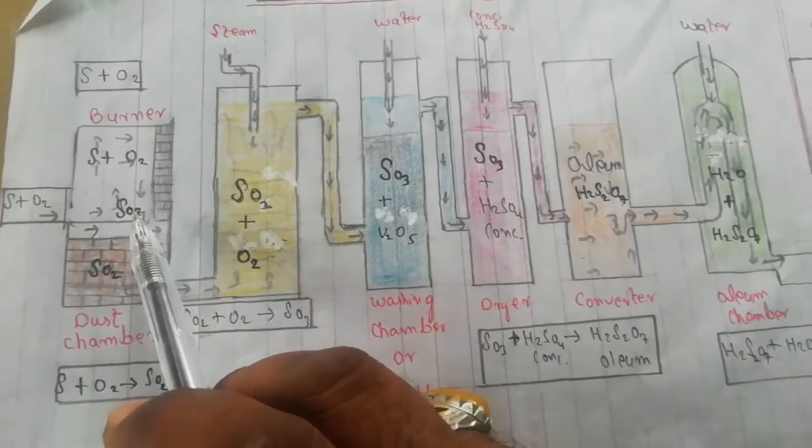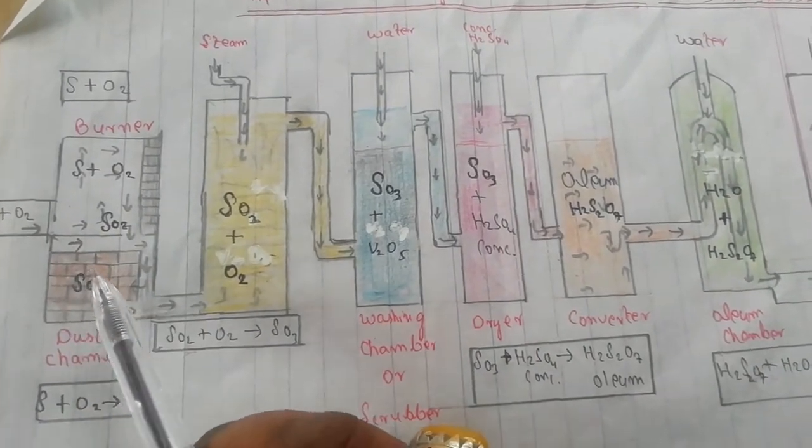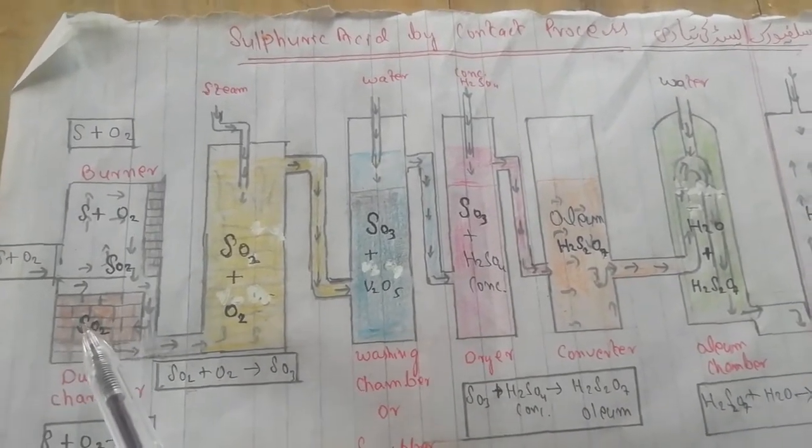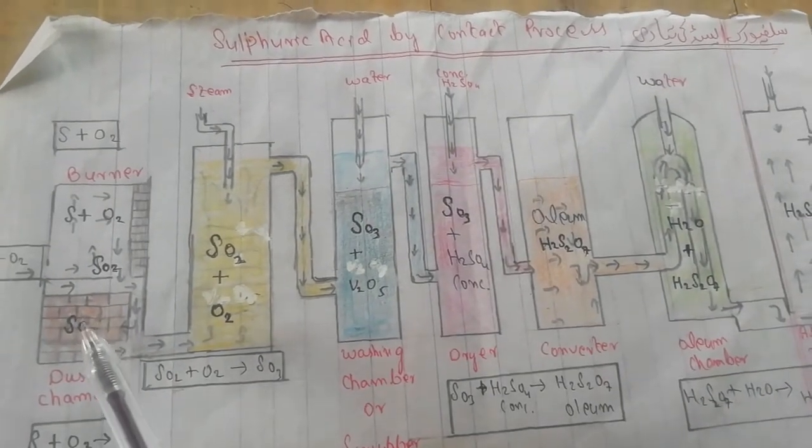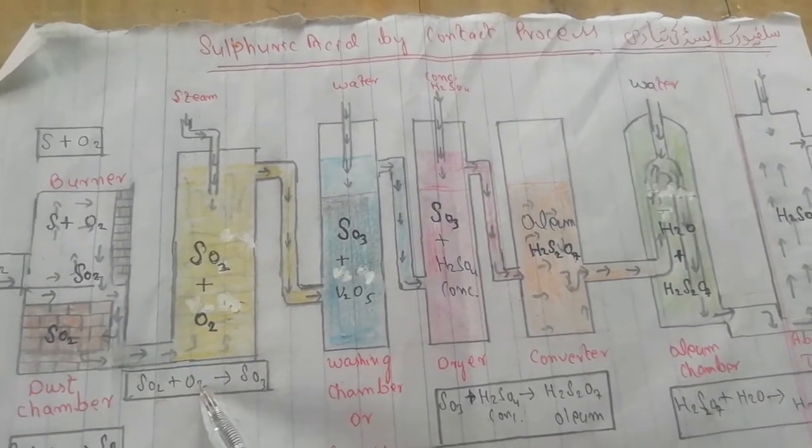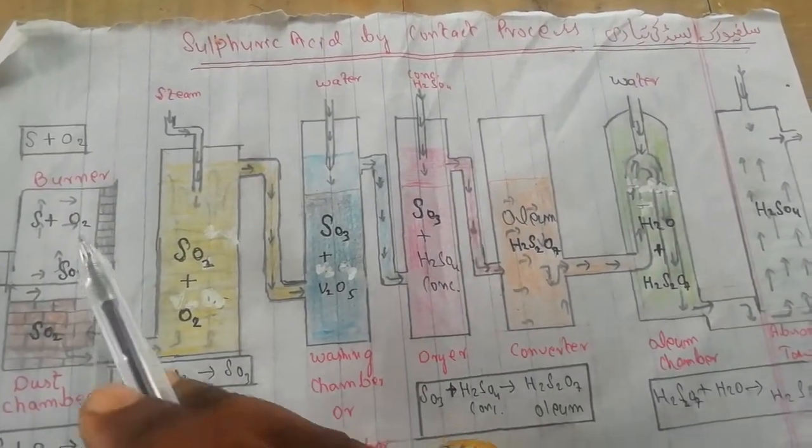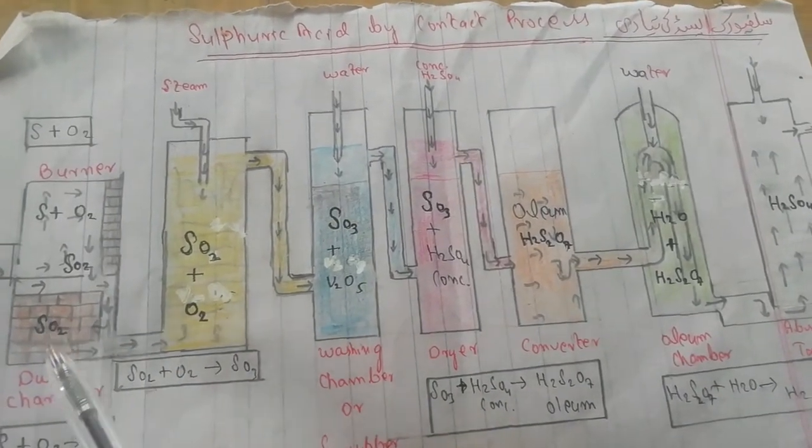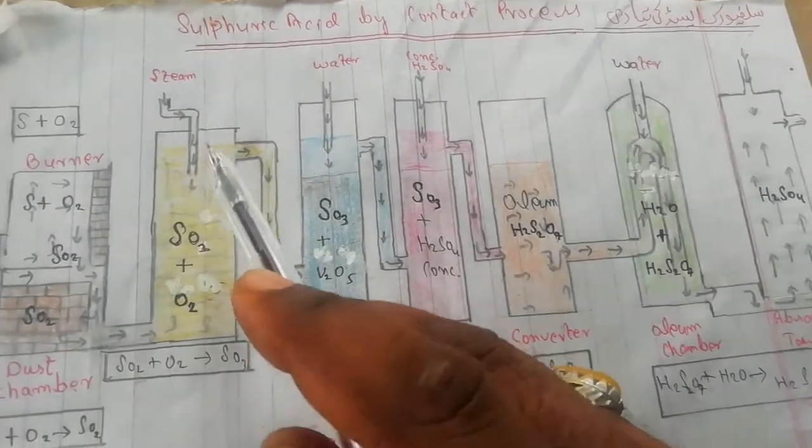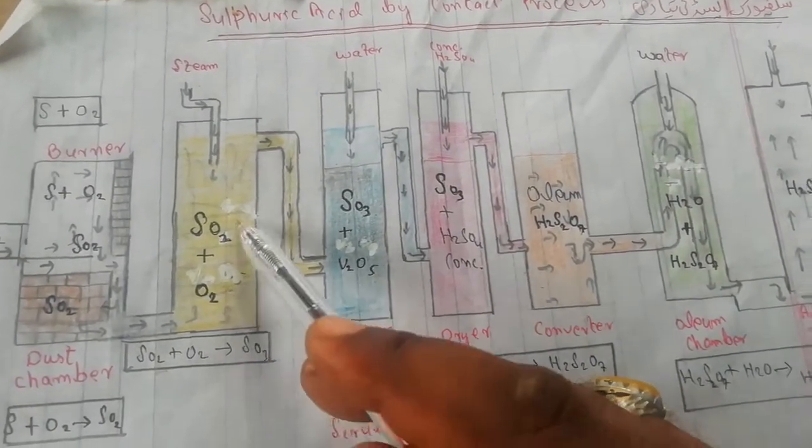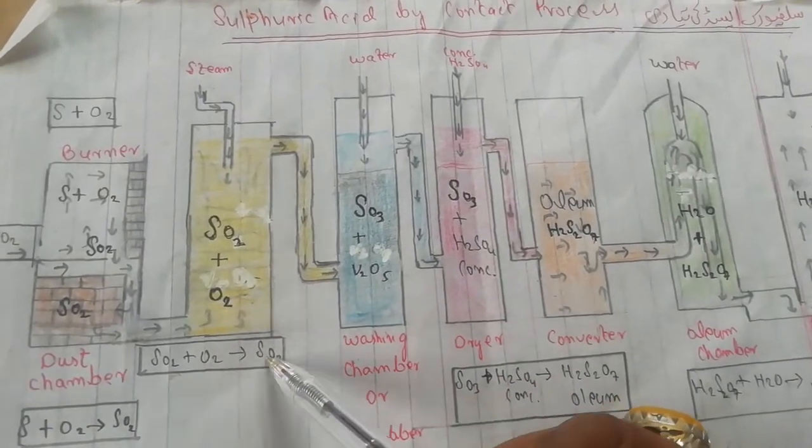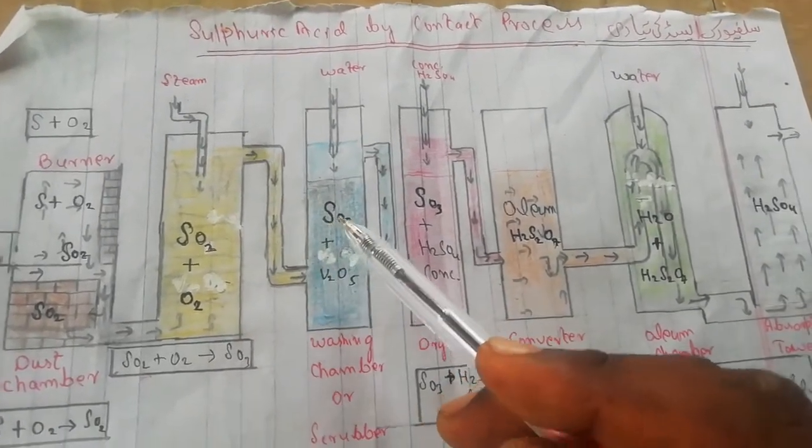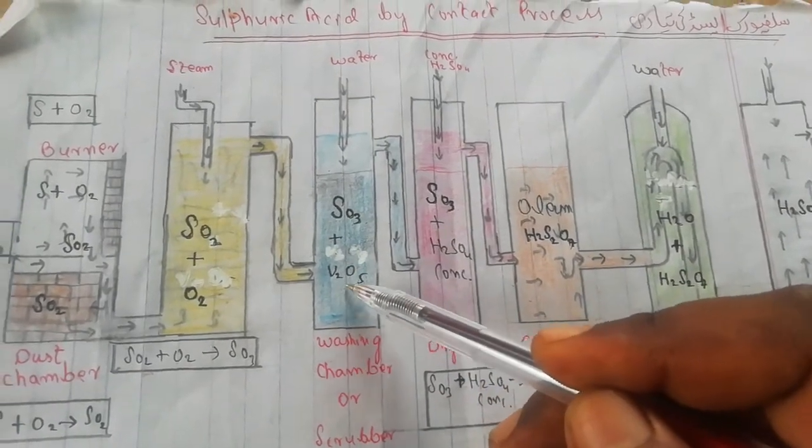The sulfur reacts with oxygen. In the dust chamber, impurities are removed. Then SO2 passes through washing chamber where it's purified. After that, SO2 enters the contact tower where it reacts with oxygen in the presence of vanadium pentoxide catalyst to form SO3.